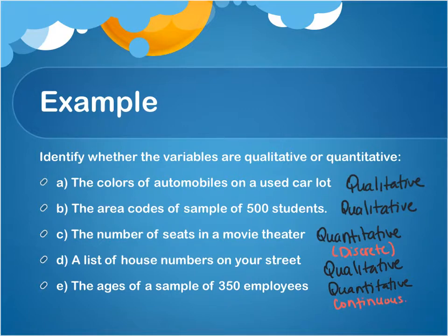So remember, variables can either be qualitative, which means they're categorical, or they can be quantitative, which means they are numerical. If it is numerical, the variable should be able to count, or it should be able to measure. If it can't count and if it can't measure, then those variables are going to be qualitative variables that are disguised as numerical variables — so keep that in mind.